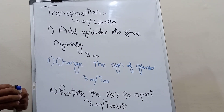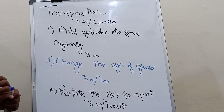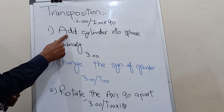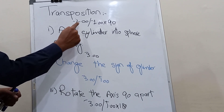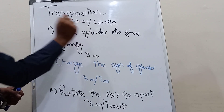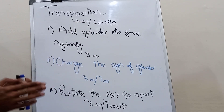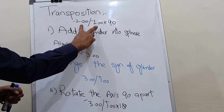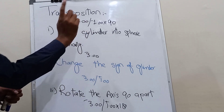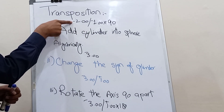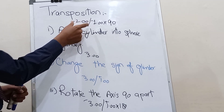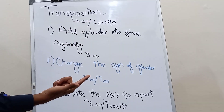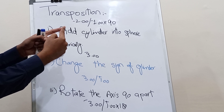Now we will discuss the different steps of simple transposition. The first step is to add the cylinder into the sphere algebraically. As you can see, we have a sphere and a cylinder and we have to add both of them algebraically. In this case we have a minus sphere and a minus cylinder — both values are in minus sign.